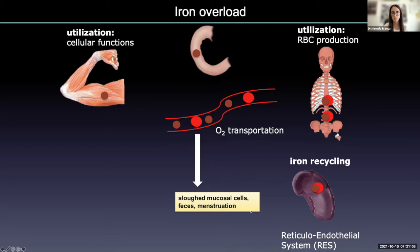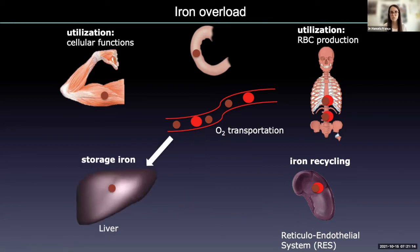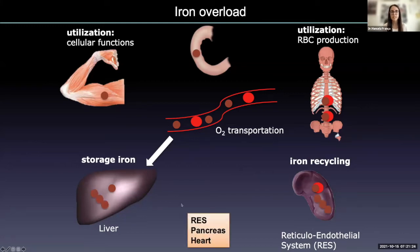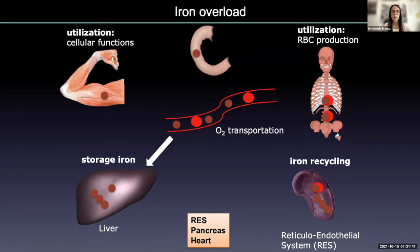Only a small portion of iron is eliminated through sloughed mucosal cells, feces, or menstruation. There is no physiological way to increase the elimination of iron. So when there is excess iron, it must be stored — mainly in the liver. But when the liver storage capacity is exceeded, iron will also accumulate in the reticuloendothelial system, pancreas, or heart.